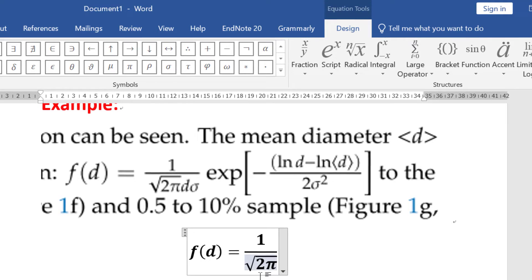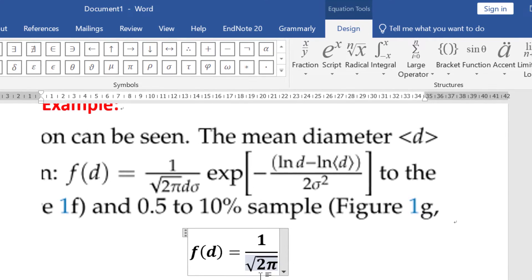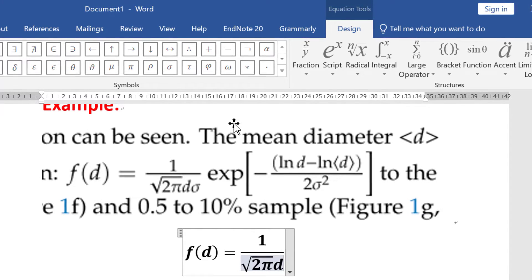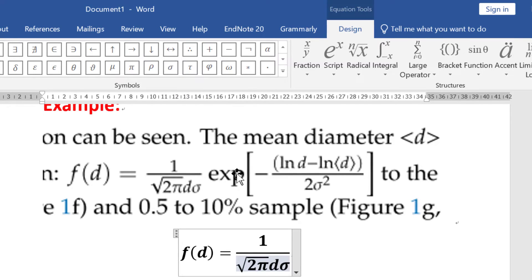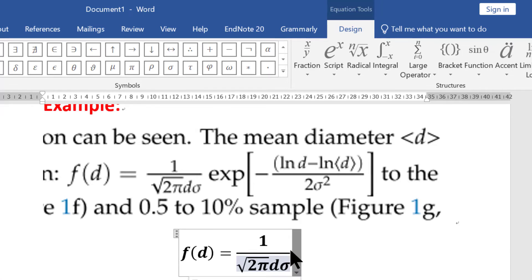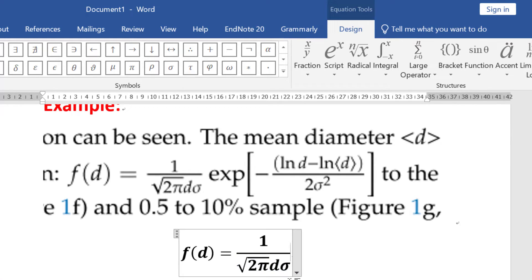Write down σ is a d, and then after d there is another symbol sigma. You can see over here there is a symbol sigma. After that, now you need to write exponential. I will type it using a keyboard: exp.